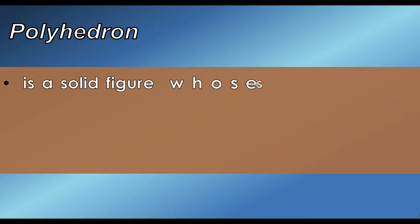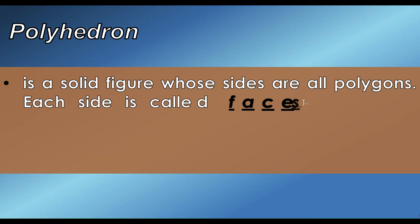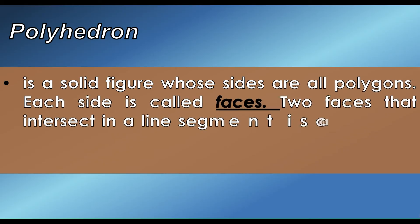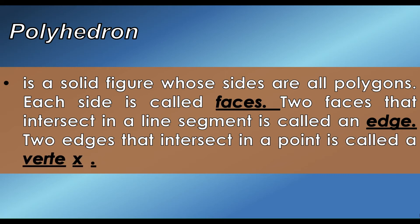Polyhedron is a solid figure whose sides are all polygons. Each side is called a face. Two faces that intersect in a line segment is called an edge. Two edges that intersect in a point is called a vertex.